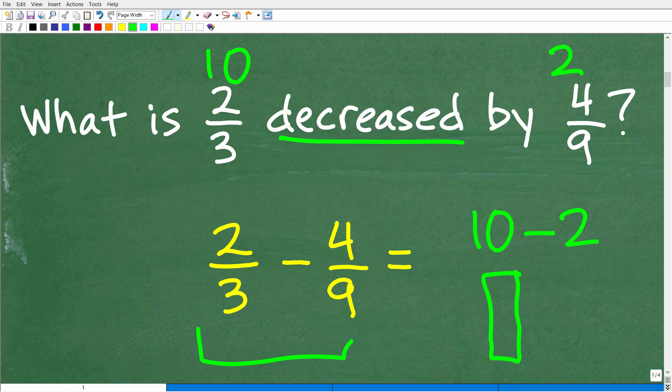Or if we had 10, like let's say we had little blocks of 10 here. One, two, three, four, five, six, seven, eight, nine, ten. So here's our little blocks of 10 and we're going to decrease it by two. We're going to take two of these blocks off and we're left with eight.